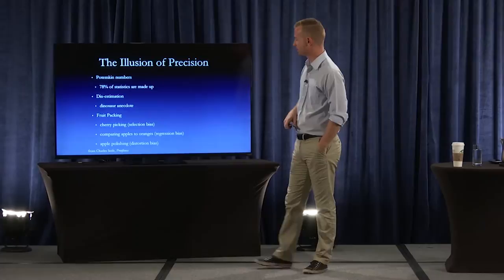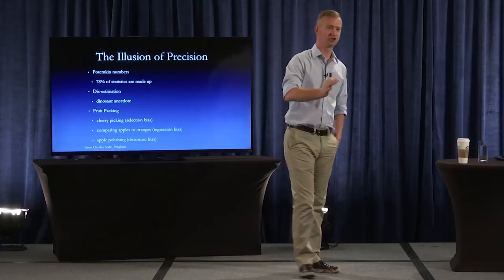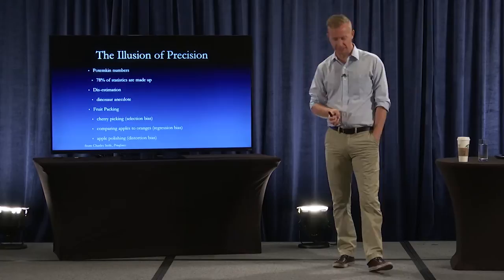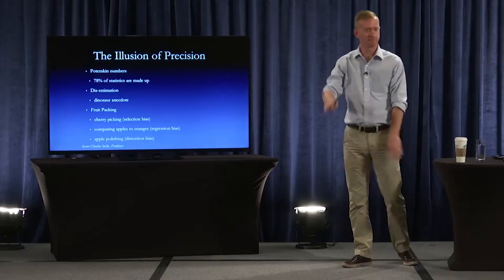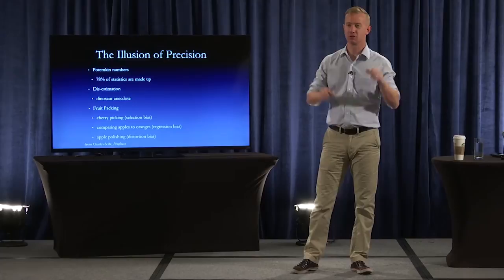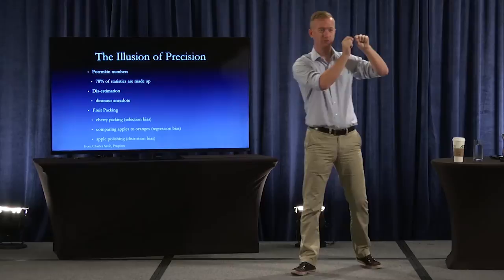The last one he calls apple polishing — this is just distortion bias. This is where you shine up the numbers, put in fancy charts, and do things to make them look a lot bigger or more significant. A famous case is where they just adjust the axes on a graph — the very famous cholesterol intervention with a particular drug showed dramatic results.